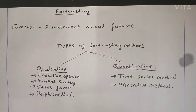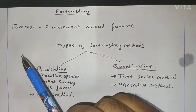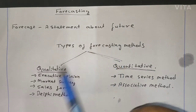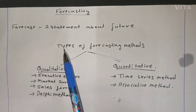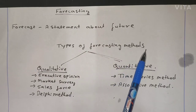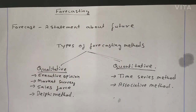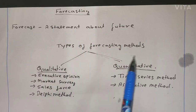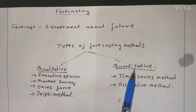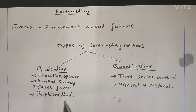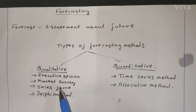Hello students, today's topic is forecasting. A forecast is a statement about the future — you are predicting what will happen. How many types of forecast methods are there? Primarily there are two methods: one is qualitative and the second is quantitative. In qualitative, there are no calculations — data is taken directly from the market, given by experts, or given by your executives.